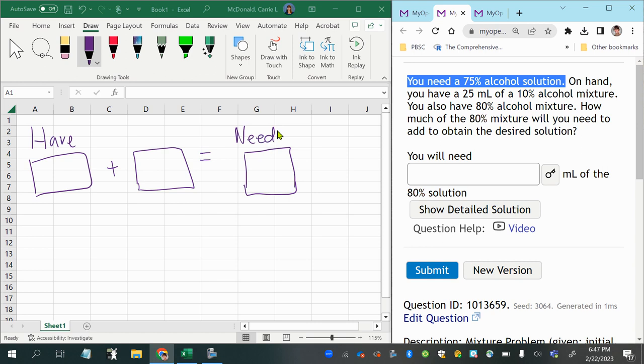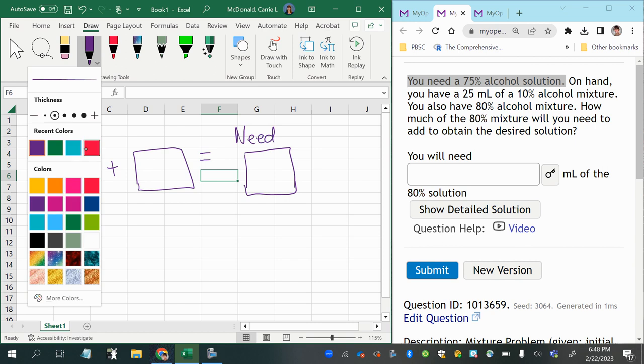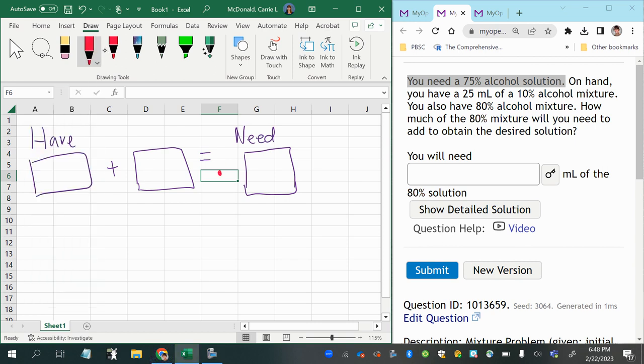And so I would put 75% or 0.75 in front of that box on the right side of the equals to indicate that I'm going to be multiplying 0.75 times some amount of the actual mixture. So this is my needed mixture, basically the goal of the whole problem.